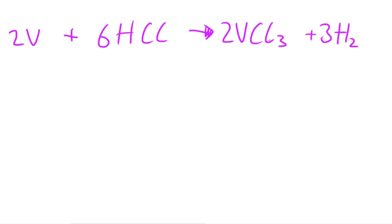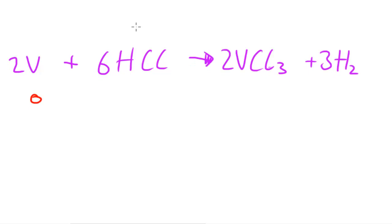Let's look at the oxidation number changes in this equation to find out what's been oxidised and what has been reduced. Vanadium in this state is not combined with anything, so its oxidation state must be zero by default. The oxidation number of hydrogen here, since it's bonded to chlorine, is plus one, and chlorine, since it's bonded to hydrogen and is group seven, must be minus one.